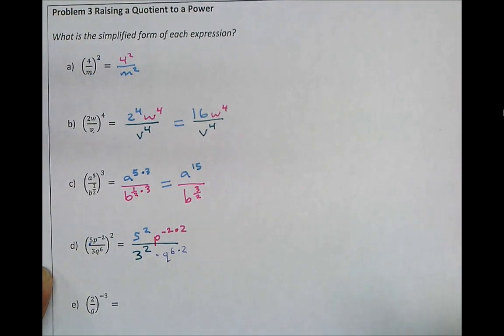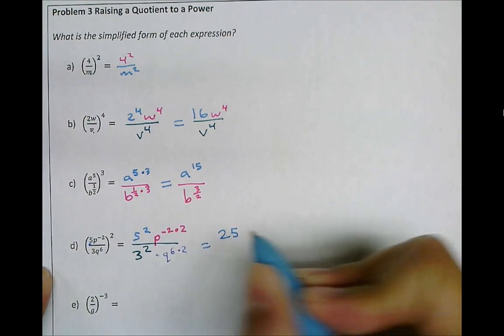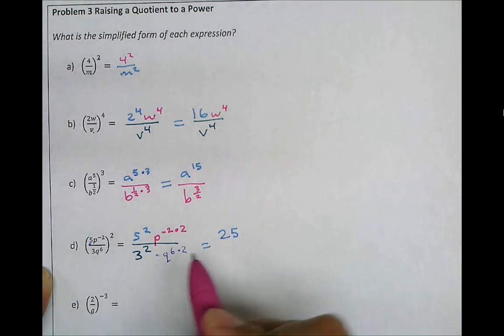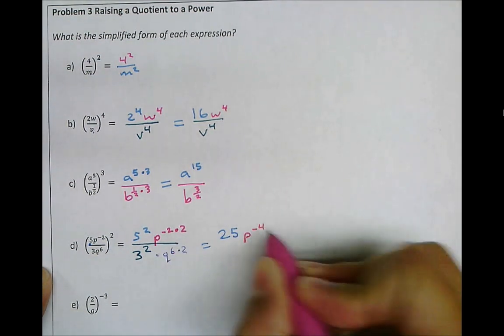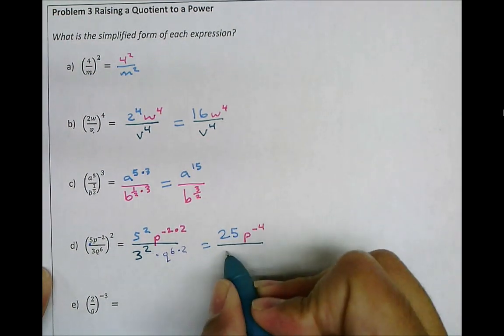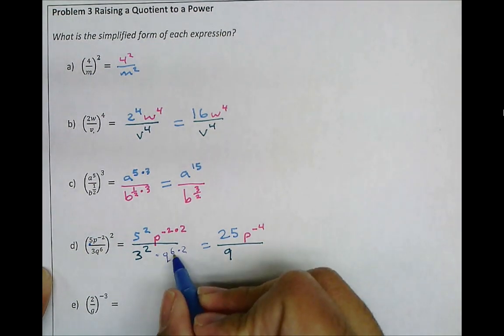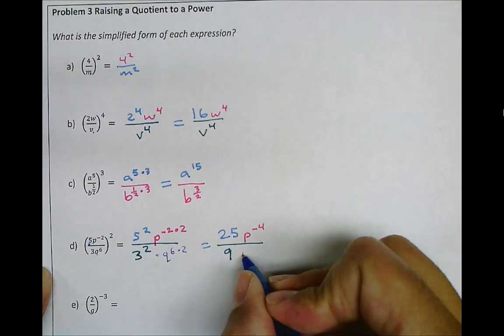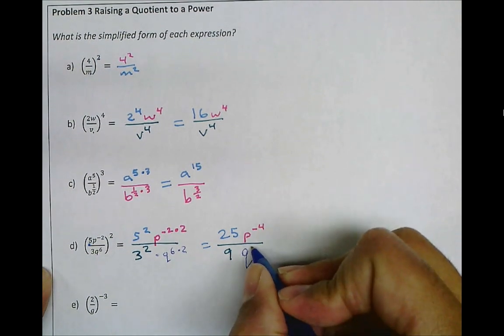Now, let's simplify this. 5 to the power of 2, 5 times 5 is 25. Negative 2 times positive 2 is negative 4. 3 raised to the power of 2 is 9. 6 times 2 is 12. So we get q to the power of 12.